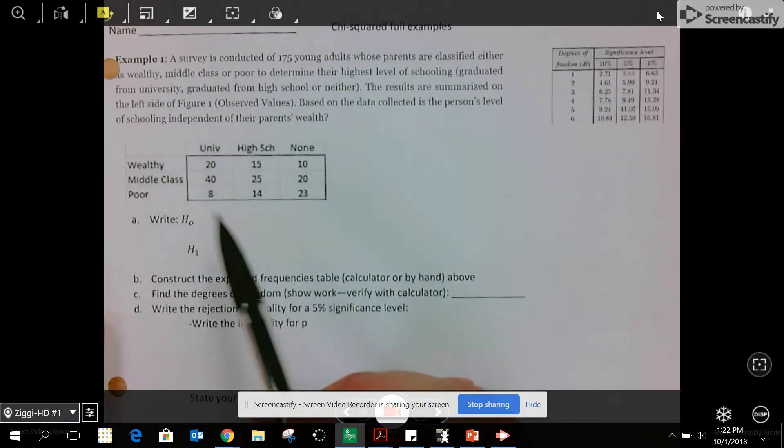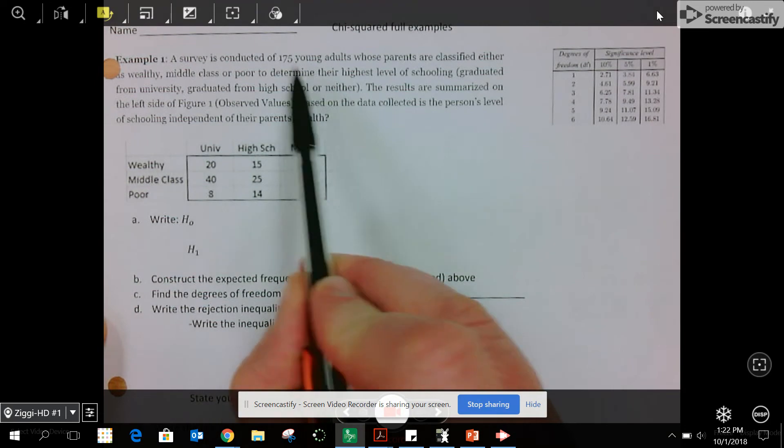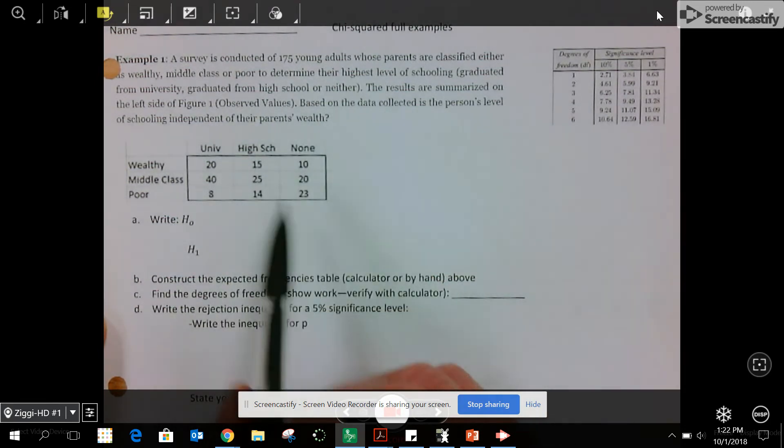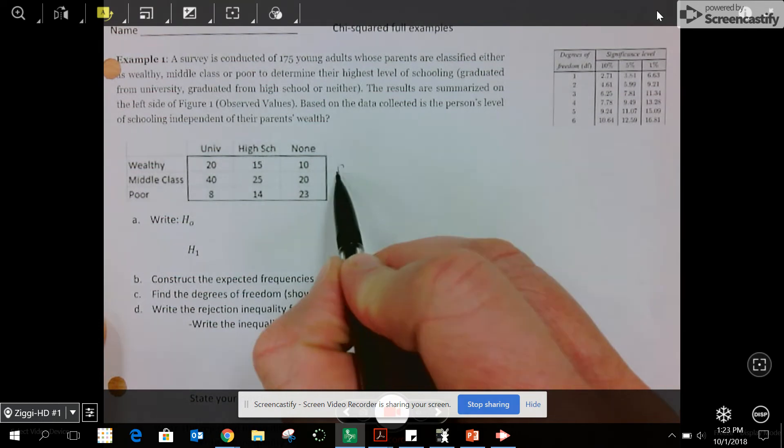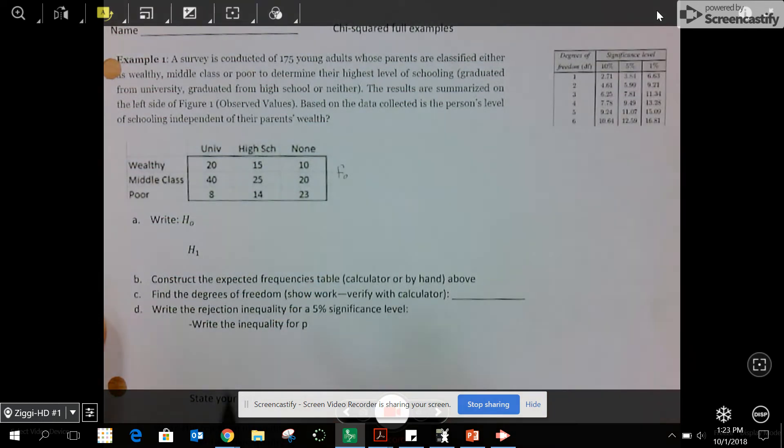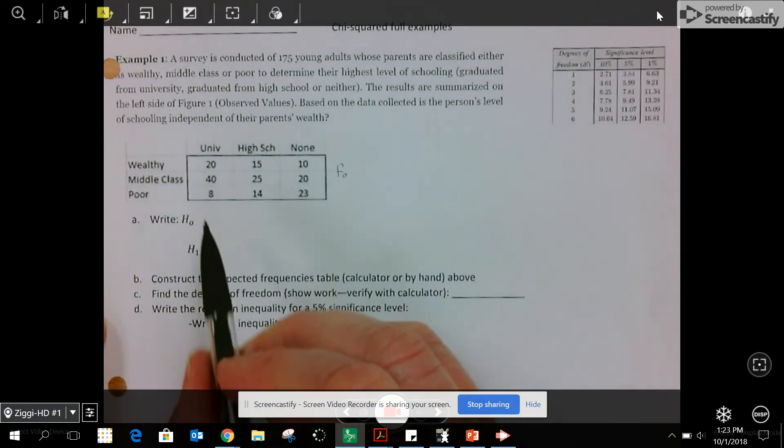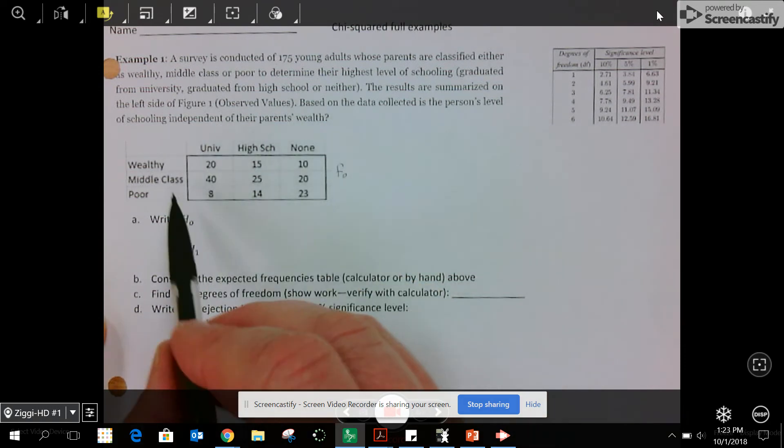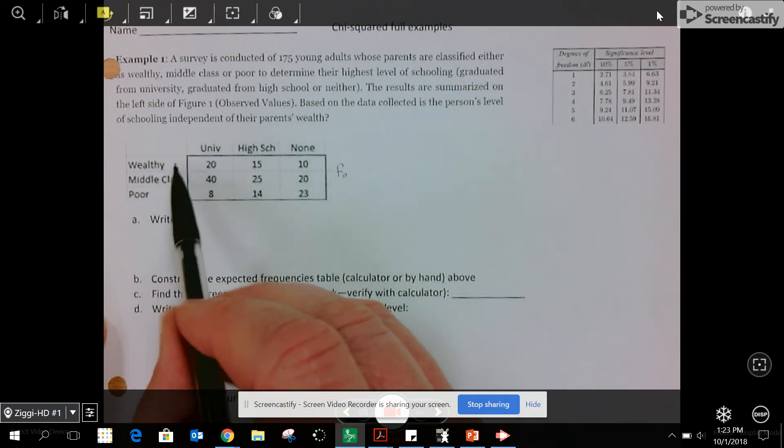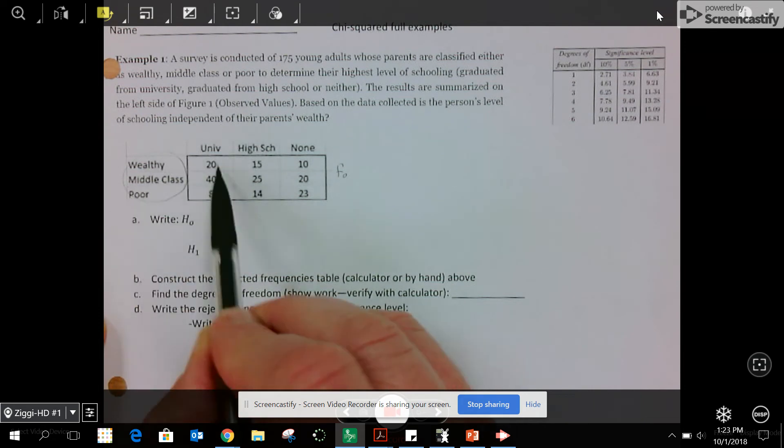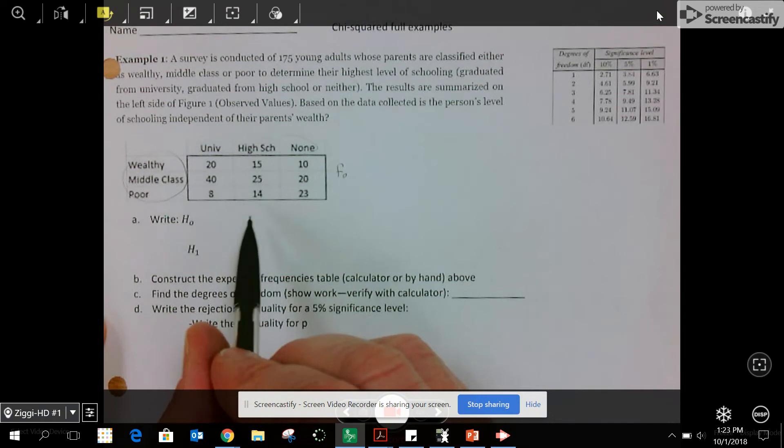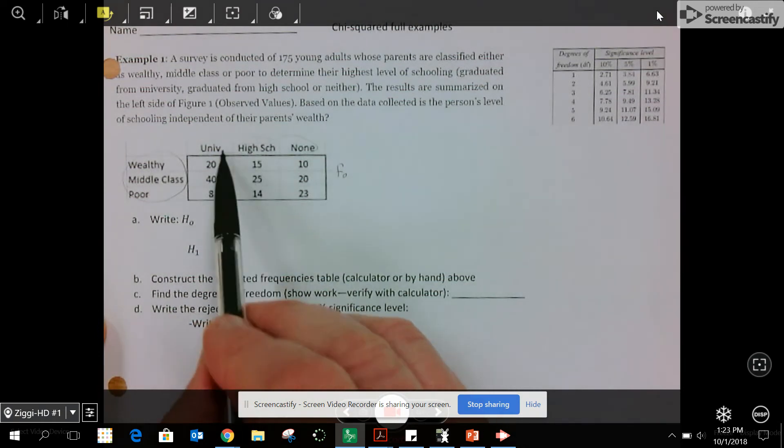We start out looking at the information we have: 175 adults. This is our data, called the observed data, f sub-zero. We're trying to show if income level is independent of level of schooling. We have three levels of schooling and three levels of income.